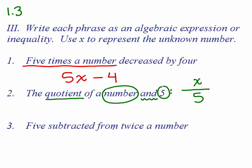Number 3 is confusing for a lot of people: "5 subtracted from twice a number." The trick here is "5 subtracted from" — that means you've got to take away 5 from something, so you already have to have something to begin with. You've got to figure out what to put in front of that minus 5, and we're taking it away from twice a number. If the number is x, twice the number would be 2x. A common mistake is to write 5 minus 2x, but then you're not subtracting 5 from something — you're starting off with 5 and subtracting something from it.